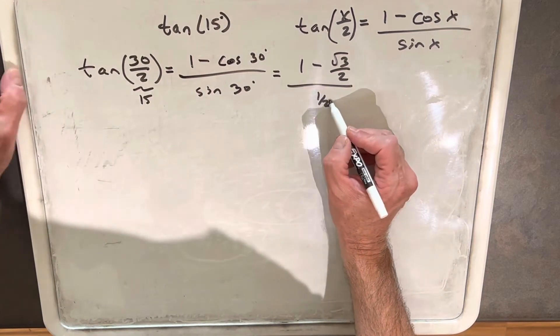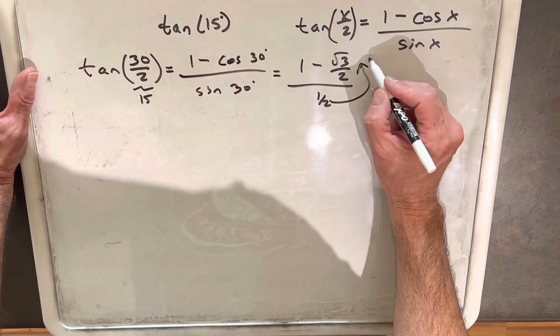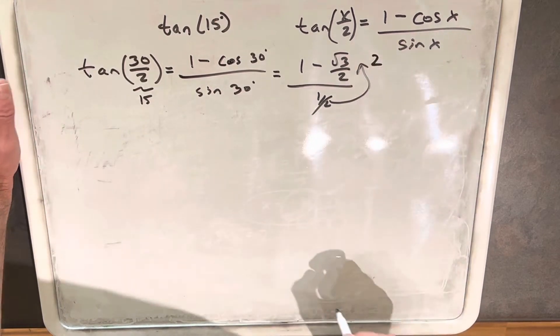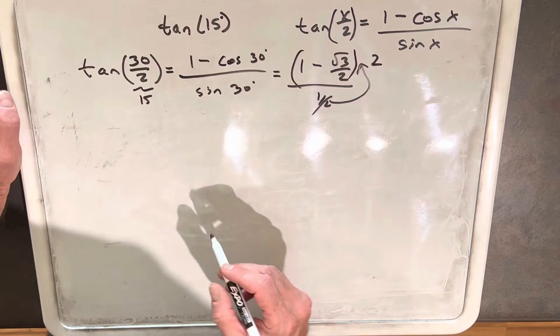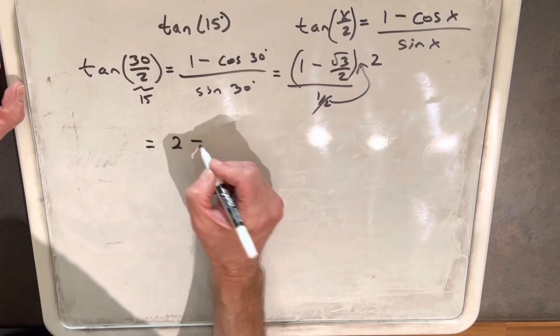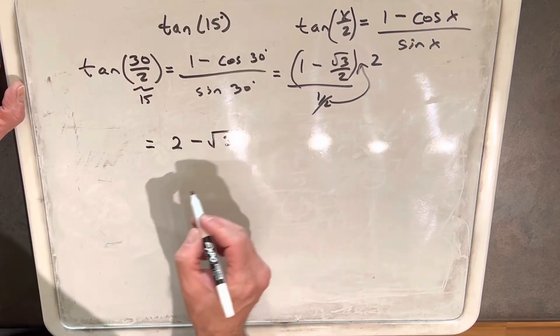But we can take this half and essentially multiply it as a 2 on the top. And what we're going to get is 2 minus the square root of 3.